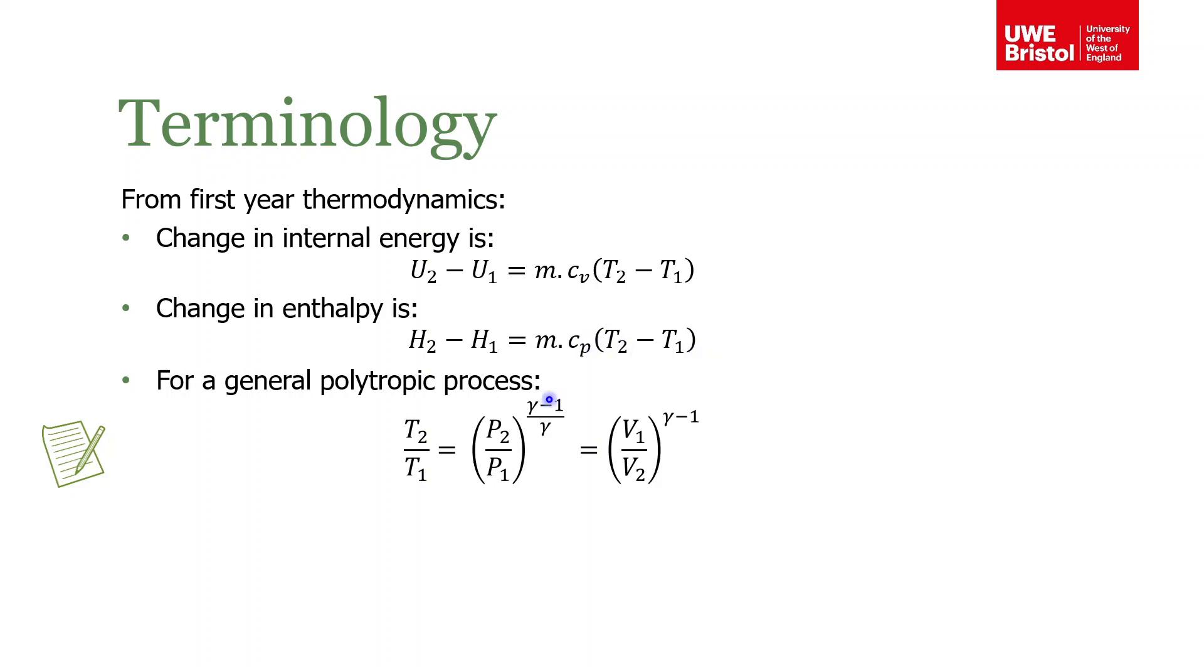The other one that you need to remember is for a general polytropic process: temperature, pressure, and volume can all be related by this. So the ratio of temperatures is equal to the ratio of pressures to this exponent, where gamma is the ratio of the specific heats. Again, if you've forgotten any of this, just go back, look at the first-year notes, and remind yourself.